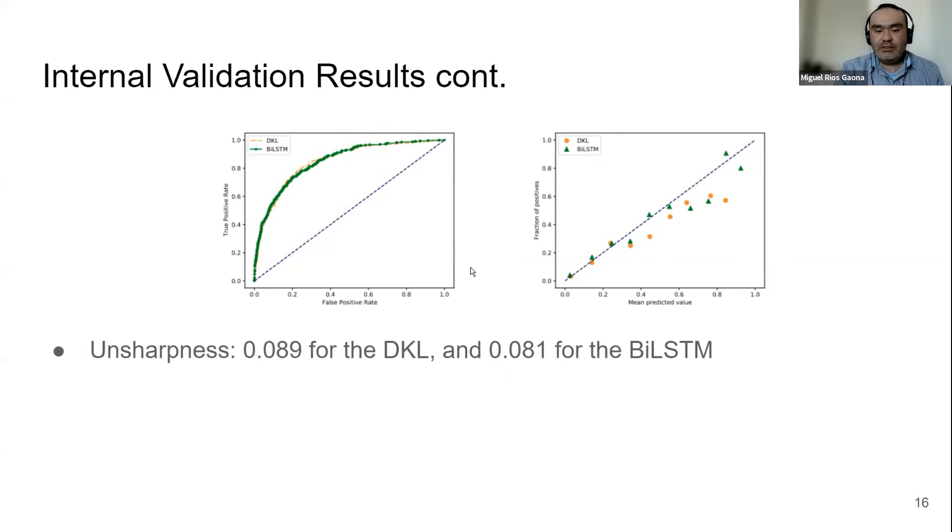The sharpness is still a bit better for the deep kernel learning, and the Brier score is still a bit lower for the deep kernel learning. But they are quite close.